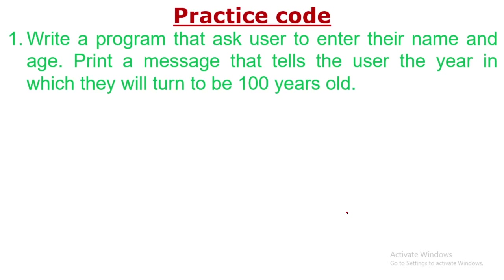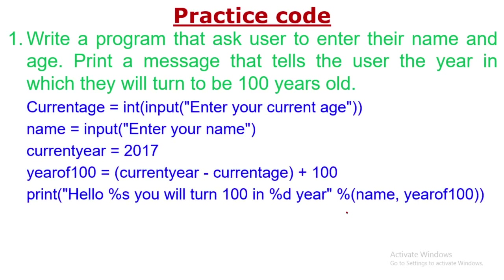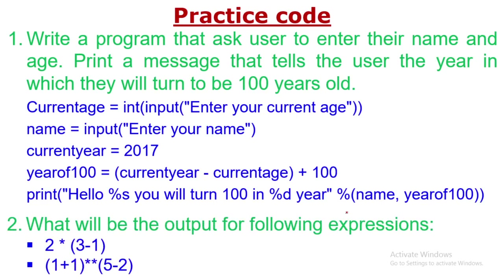Here is some practice code: write a program that asks the user to enter their name and age, and prints a message telling the user the year in which they will turn 100. You enter your current age and it will show when you will be 100. Try this code and put your answer in the comments box. The second question asks what will be the output of the following expression — put the statement in a Python command prompt and confirm the output in the comments.